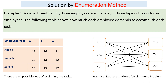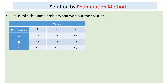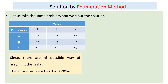Here is a graphical representation of this assignment problem. Since there are n factorial possible ways of assigning tasks, for this 3×3 matrix we have 3 factorial possible ways of assigning the task. Three factorial means 3 times 2 times 1, so there are six possible ways of assigning the task.